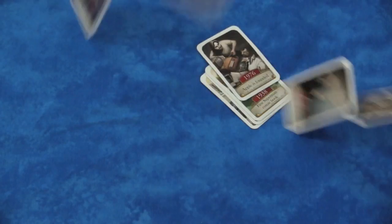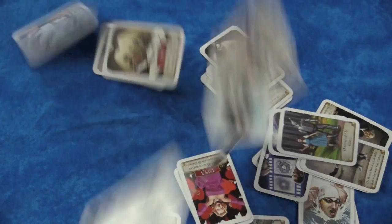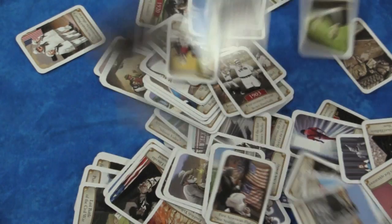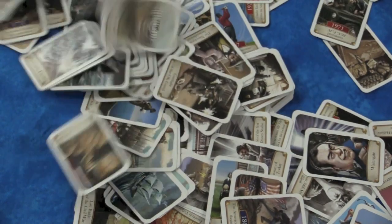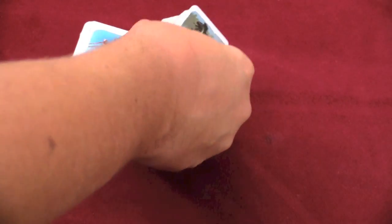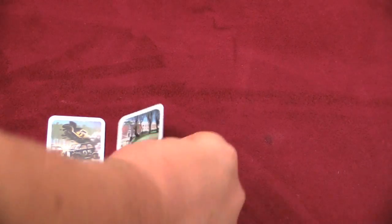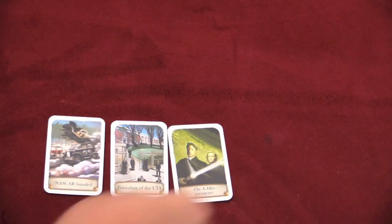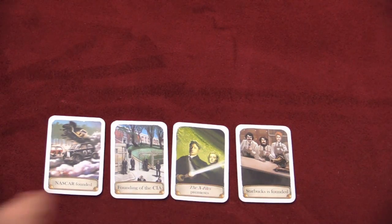They're like other Timeline games, so if you've already seen a Timeline review of mine, you can skip this next part. But let me show you how the game plays. Each game comes with a stack of cards — about half of this big stack here comes in each game. Each person gets four cards put in front of them. So for example, here I have NASCAR founded, the founding of the CIA, the X-Files premiere, and Starbucks founded.